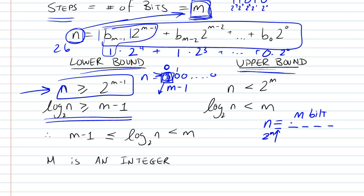This means n has to be less than 2 to the m, because the most you can fill are all the m bits you have here. This is 2 to the m minus 1, and so on, till 2 to the 0.